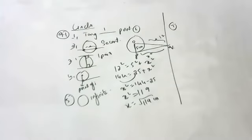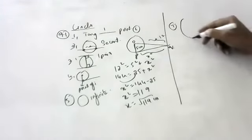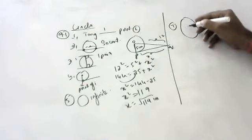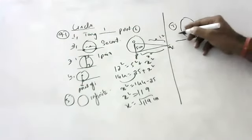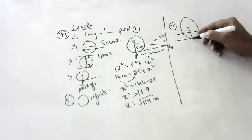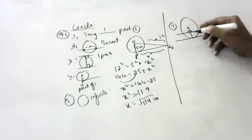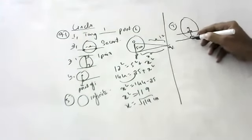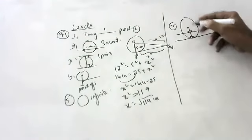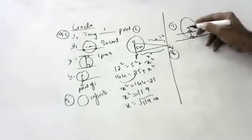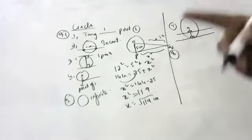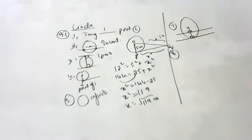Draw a circle and two lines parallel to a given line so that one is a tangent and the other is also a tangent. We draw perpendicular bisectors, children, and you will get the tangents. One is a tangent, the other one is a tangent. We know from Class 9 that the radius is perpendicular to the tangent.